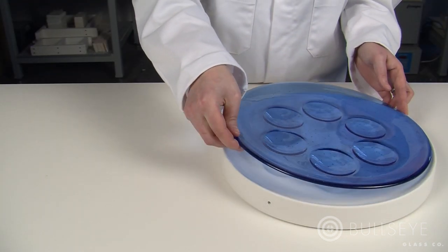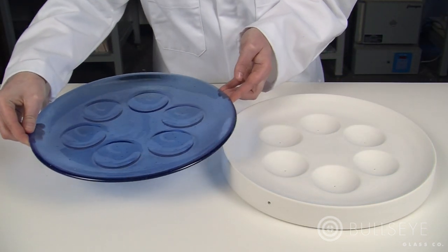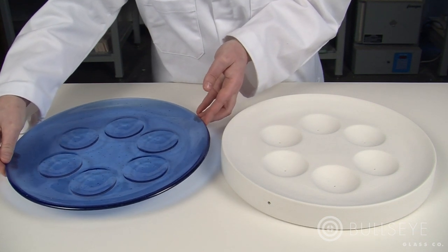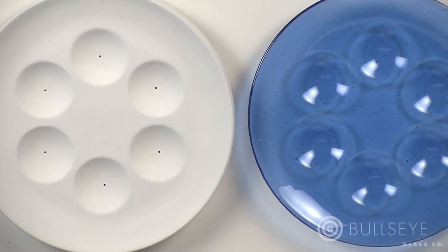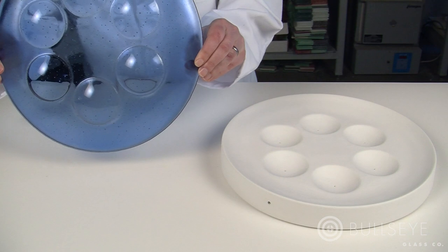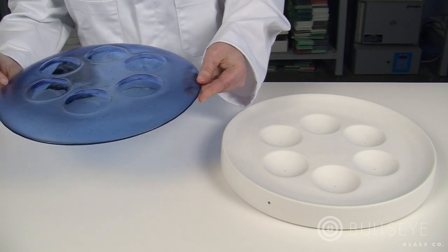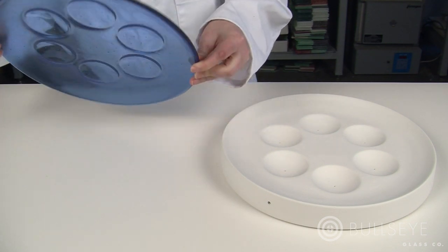We commonly hold at process temperatures within this range for over an hour, especially for molds with recessed areas and steep sides. This lower for longer approach to slumping reduces the amount of mold texture picked up by the glass and helps maintain a uniform overall thickness.